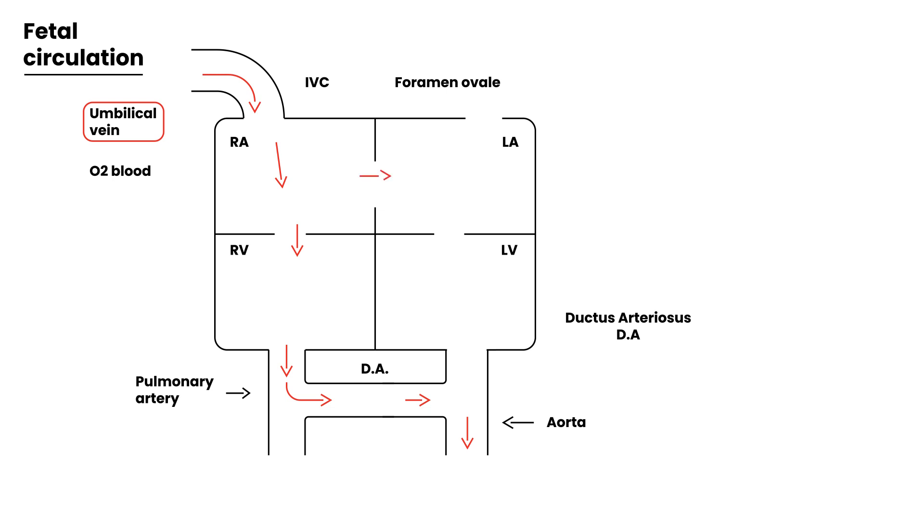Essentially what happens is when the blood comes back to the right atrium, initially most of it actually goes through the foramen ovale to the left atrium. Then the blood comes down to the left ventricle and then out through the aorta. The blood that doesn't go through here that passes through the right ventricle will eventually be able to get to the aorta via the ductus arteriosus here. So that's how fetal circulation works.